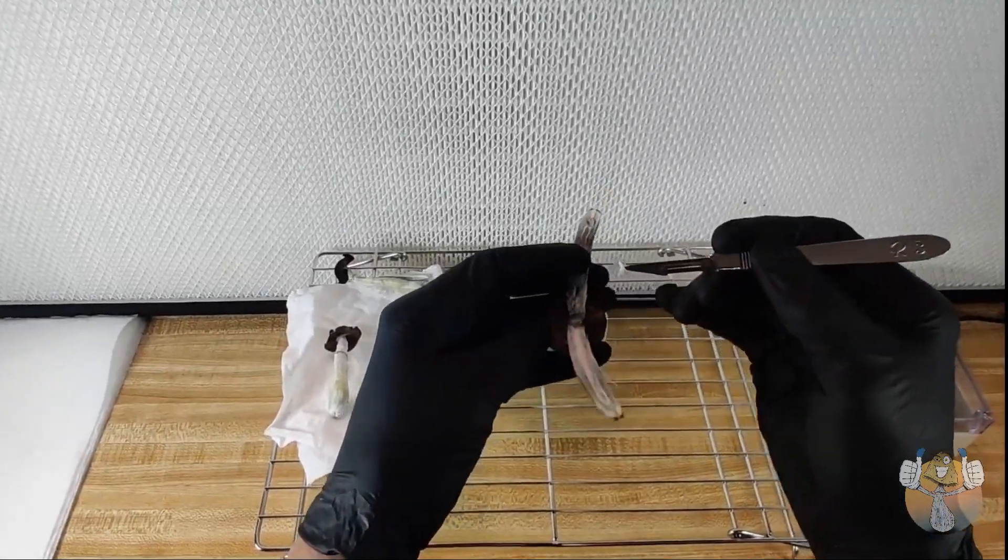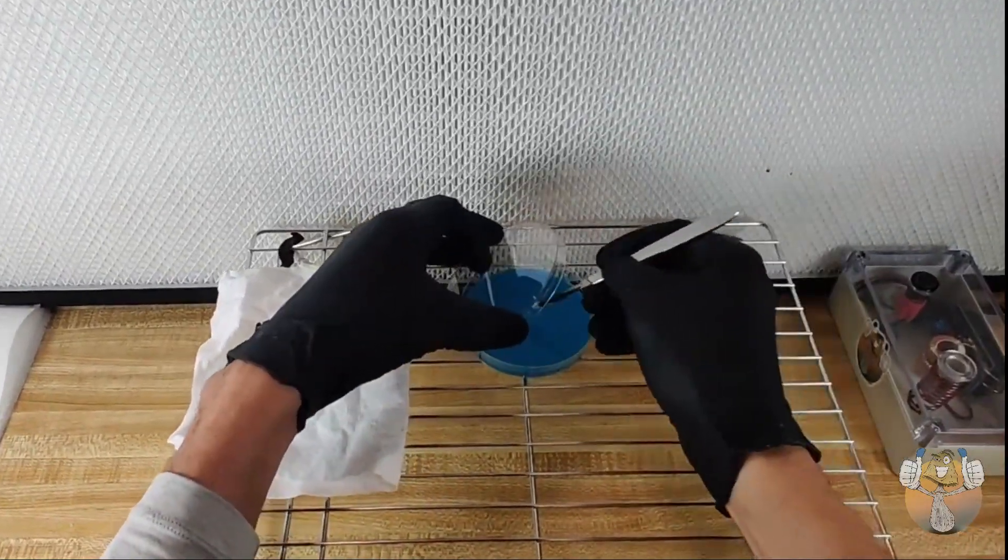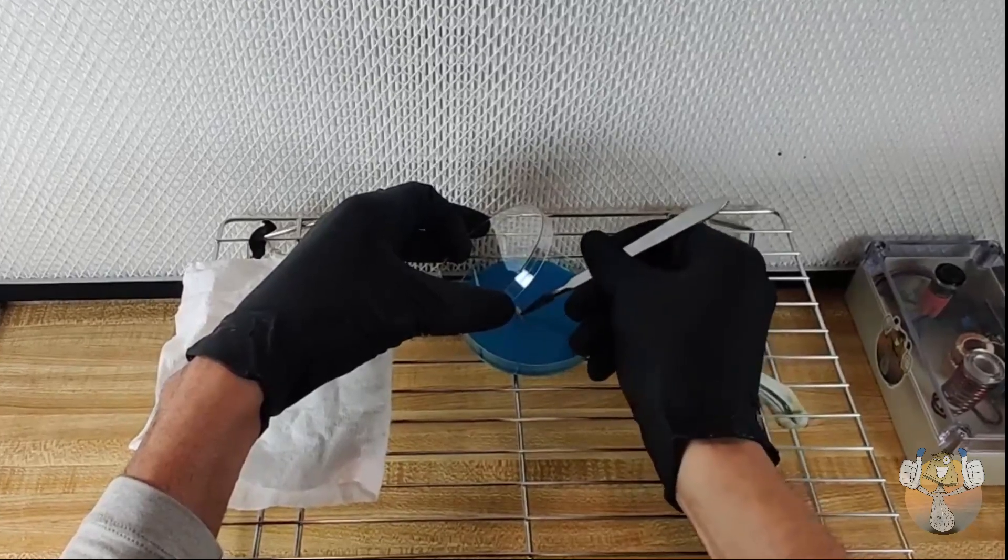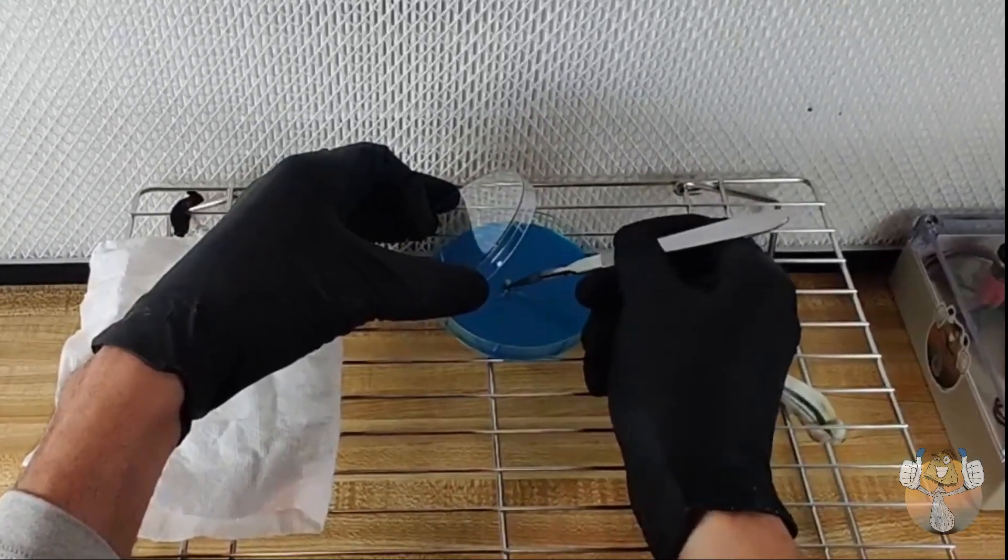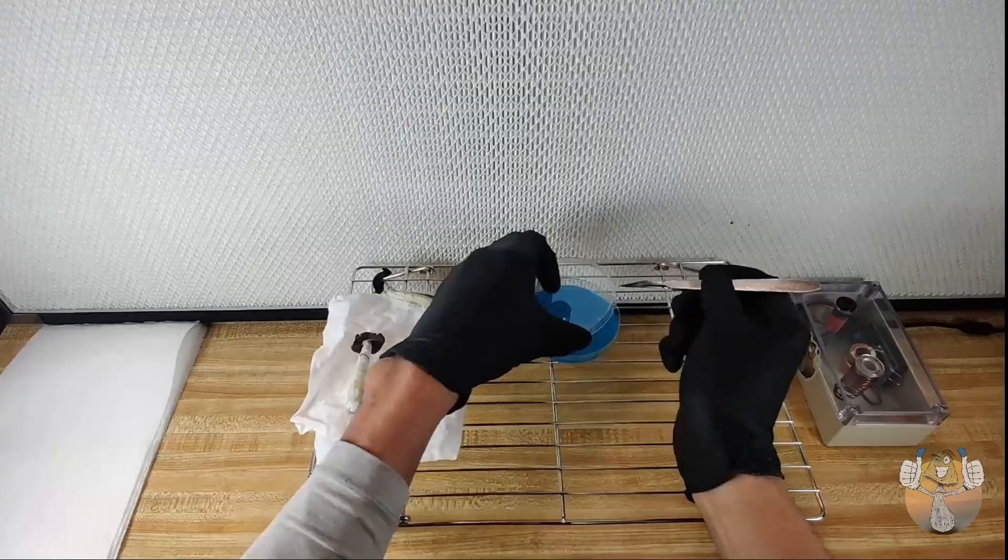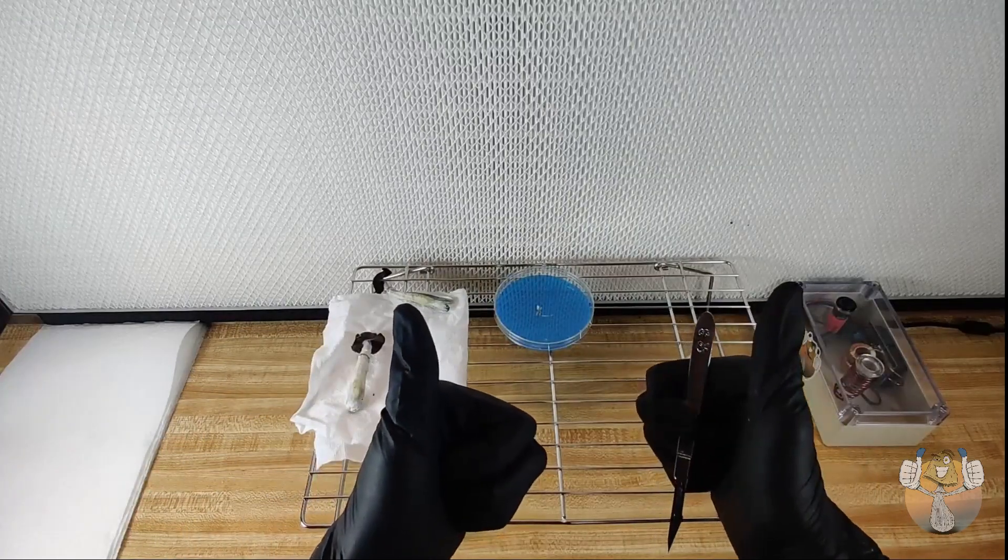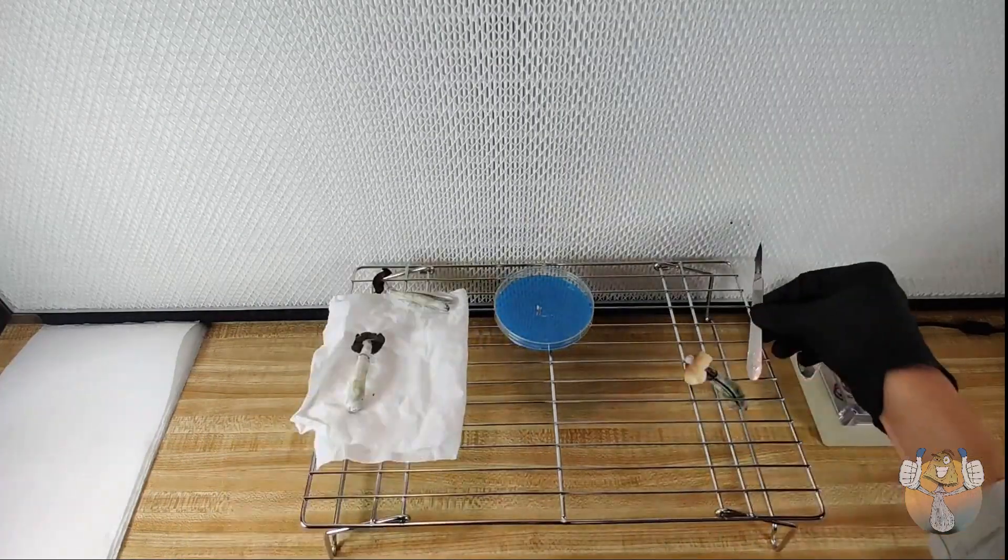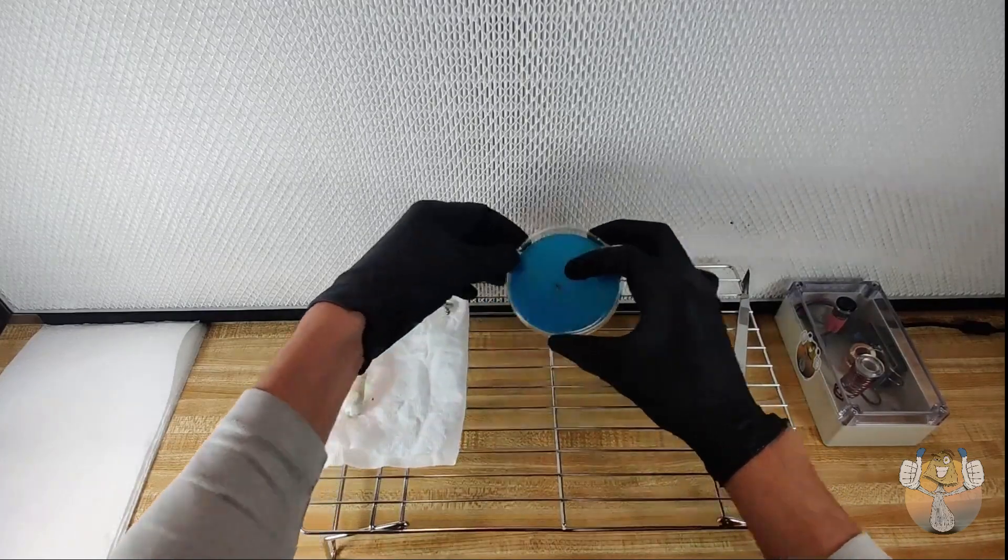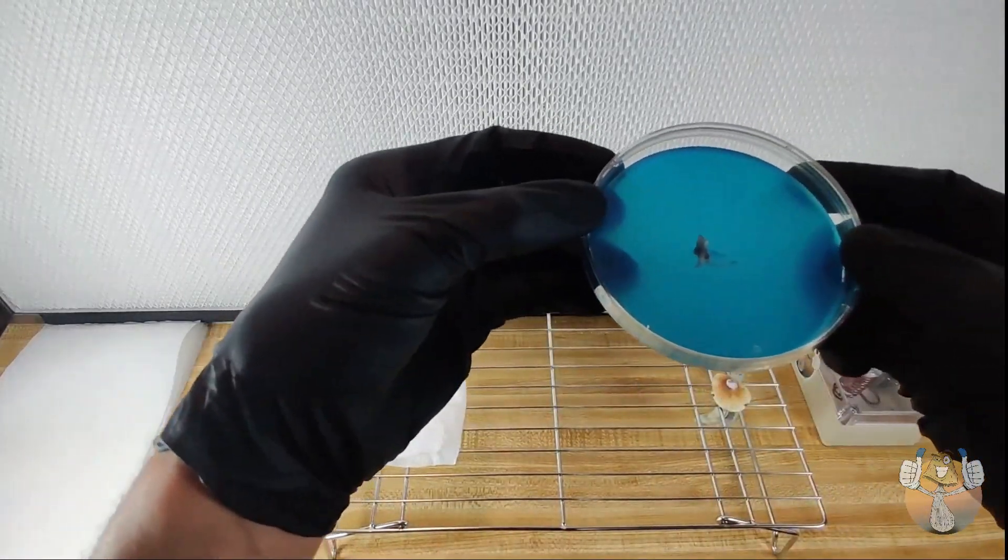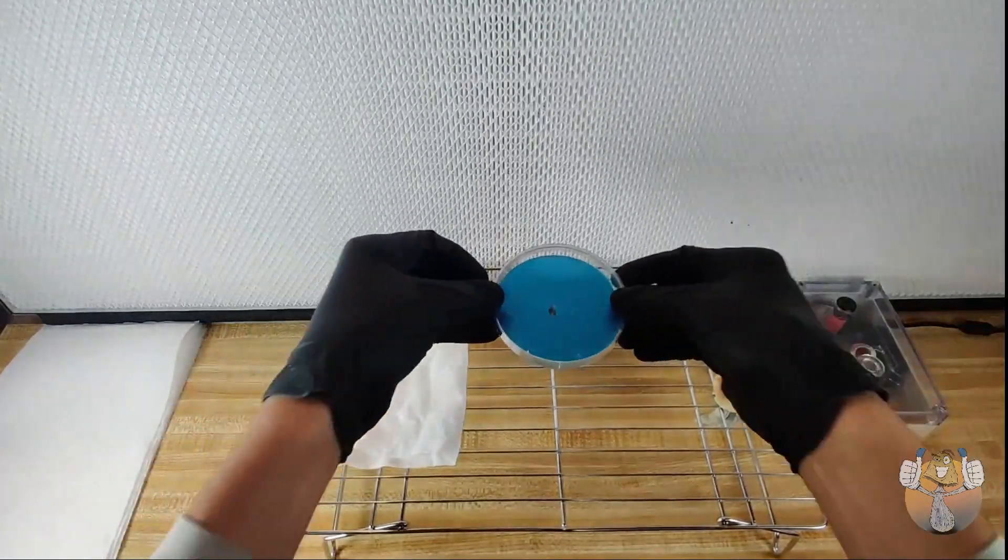I'm just going to go ahead and take some of this stipe material, and we are going to place that onto our agar dish like so. Go ahead, cover it back up, and you're all set. Easy as that. And we have our little piece of mushroom material on our agar dish.